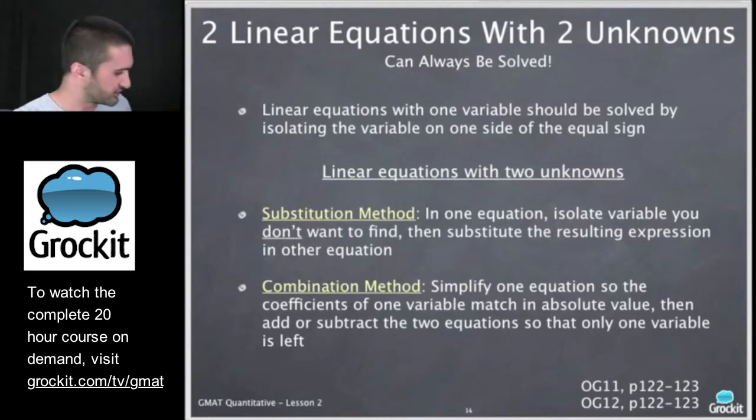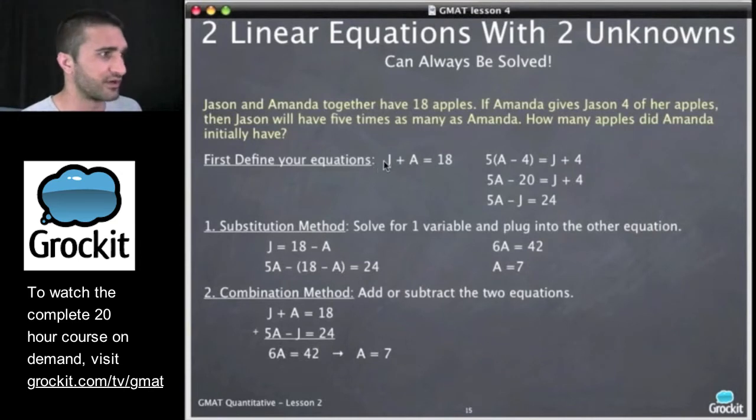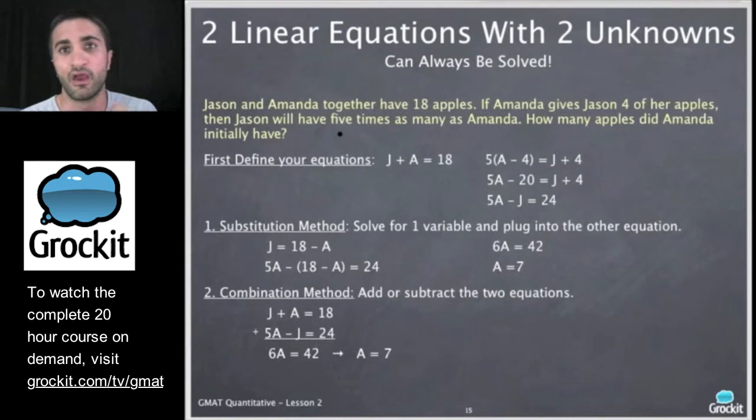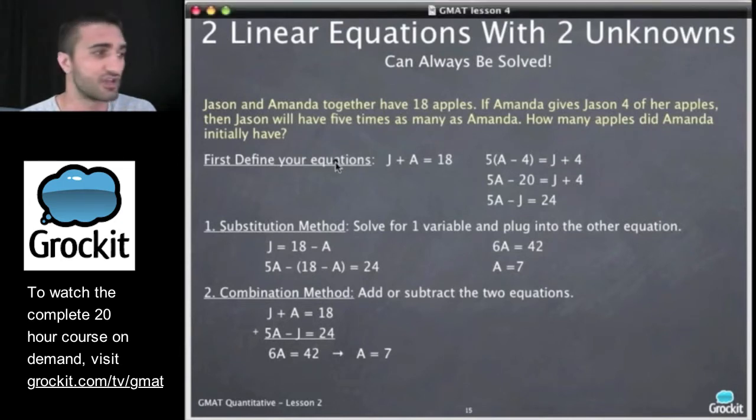And we'll look at some examples over time as well of these types of questions. But like I said, I want to take a look at a linear equation example with you guys before class ends. We're talking just a little bit more about linear equations. Let's take a look at an example question here that we've written. Jason and Amanda together have 18 apples. If Amanda gives Jason four of her apples, then Jason will have five times as many apples as Amanda. How many apples did Amanda initially have? Here we have this nasty GMAT question that's written in English, but it's really a math question. We have to manage it as an information management challenge. And how can we do that? So the first statement, Jason and Amanda together have 18 apples. So if we add all their apples, Jason's apples plus Amanda's apples will get 18 apples. That's one equation.